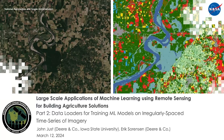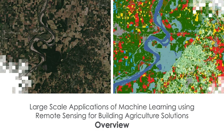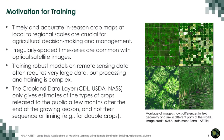Welcome back to the RSET training on large-scale applications of machine learning using remote sensing for building agriculture solutions. My name is Sean McCartney and I'm an RSET trainer based out of NASA's Goddard Space Flight Center in Greenbelt, Maryland. I want to welcome you all to the second part of the three-part webinar series. The motivations for hosting this training topic are that timely and accurate in-season crop maps at local to regional scales is crucial for agricultural decision-making and management.